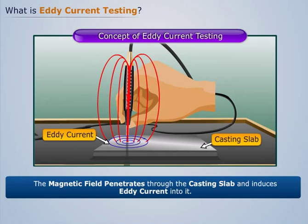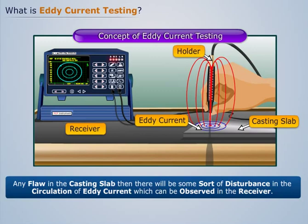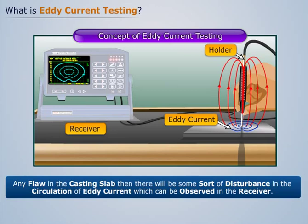We can detect the presence of Eddy current with the help of a receiver, which is connected to the holder. Now if there is any flaw in the casting slab, then there will be some sort of disturbance in the circulation of Eddy current, which can be observed in the receiver.